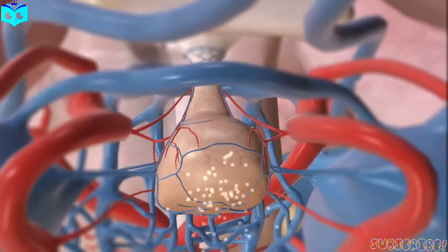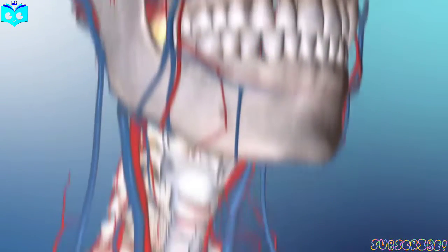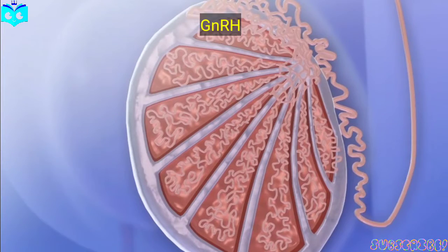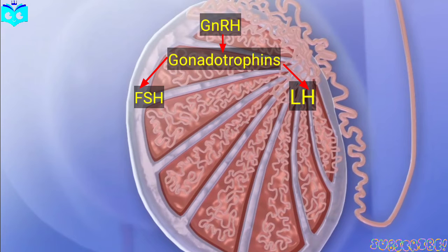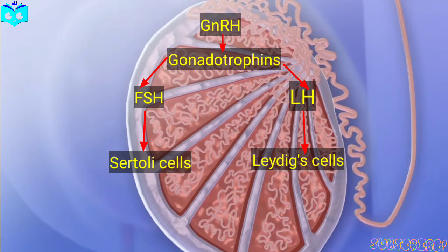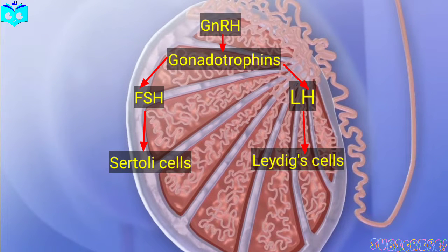The hypothalamus gland in the brain releases GnRH, gonadotrophin-releasing hormone, which acts on the pituitary gland and makes it release the gonadotrophins FSH, follicle-stimulating hormone, and LH, luteinizing hormone. FSH acts on Sertoli cells and initiates spermatogenesis. Sertoli cells also release inhibin, which inhibits the hypothalamus from releasing more GnRH.